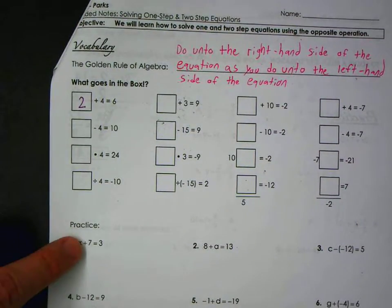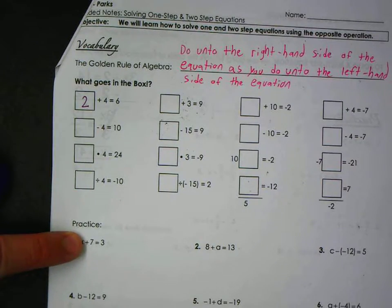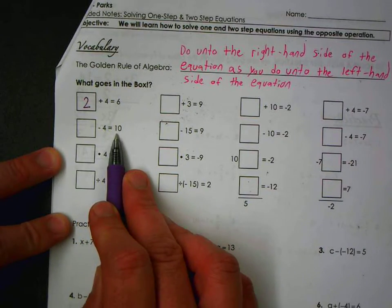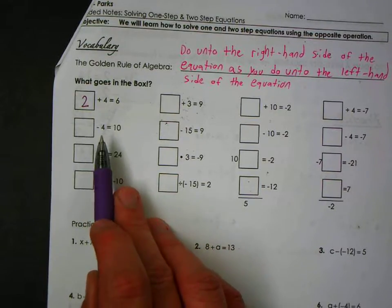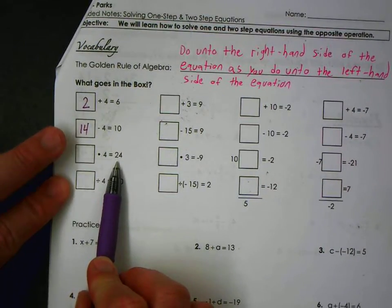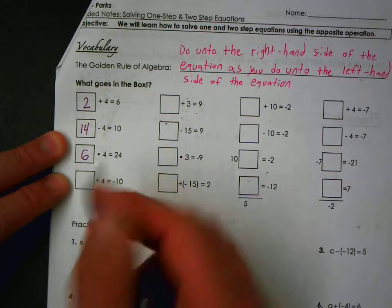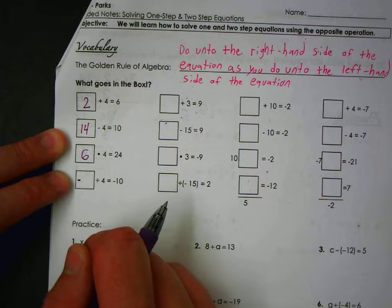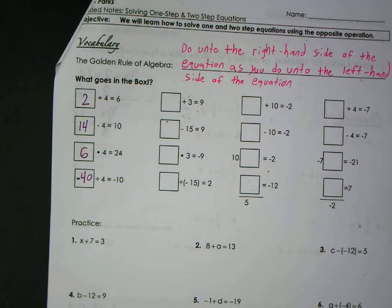Now in algebra it would look something like this, and all that means is what number plus seven is three. Instead of a box we put a variable x. What number minus four is ten? Fourteen. It's going to be four bigger because you're going to add four to both sides. Fourteen minus four is ten. What number minus four is twenty-four? Six. What number when you divide it by four do you get negative ten? Negative forty.